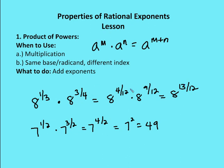So 1 third becomes 4 twelfths, and 3 fourths becomes 9 twelfths. I add 4 to 9 and end up with 8 to the 13 twelfths. In the second example, I have 7 to the 1 half times 7 to the 3 halves. I add 1 half and 3 halves together to get 4 halves. 4 halves is the same as 2, and 7 squared is the same as 49.